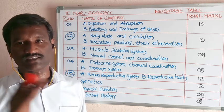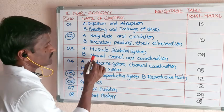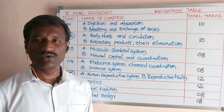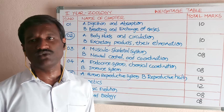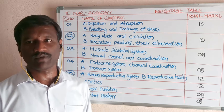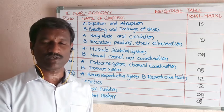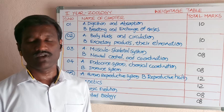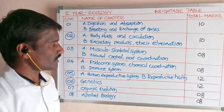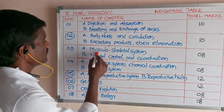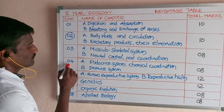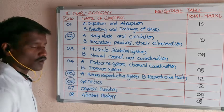Next is neural control and coordination. Topics include different types of neurons, structure and function of the brain and spinal cord, types of the nervous system — peripheral nervous system and central nervous system — and how nerve impulses are transmitted through neurons. The weightage of the third chapter is 8 marks.